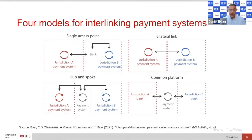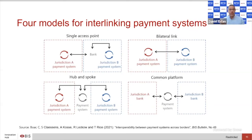This could be as simple as a Nostro-Vostro relationship with a specific entry point into a system in another region. This exists today in many systems. You can think about how this scales up to a larger number of relationships — and that's where a lot of the friction lies.